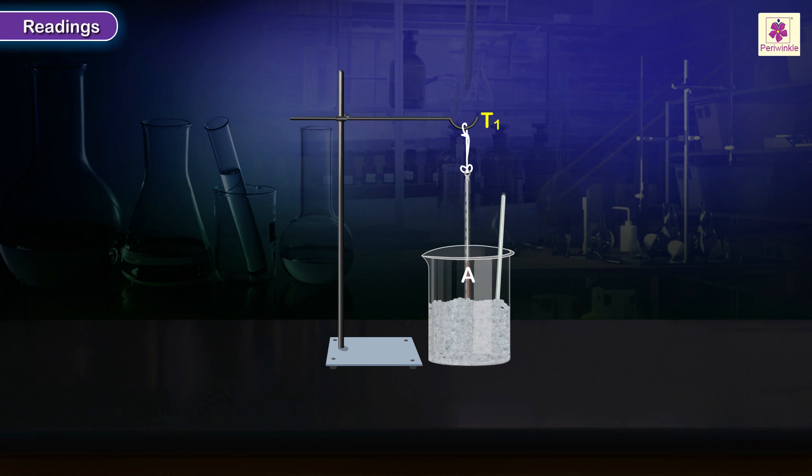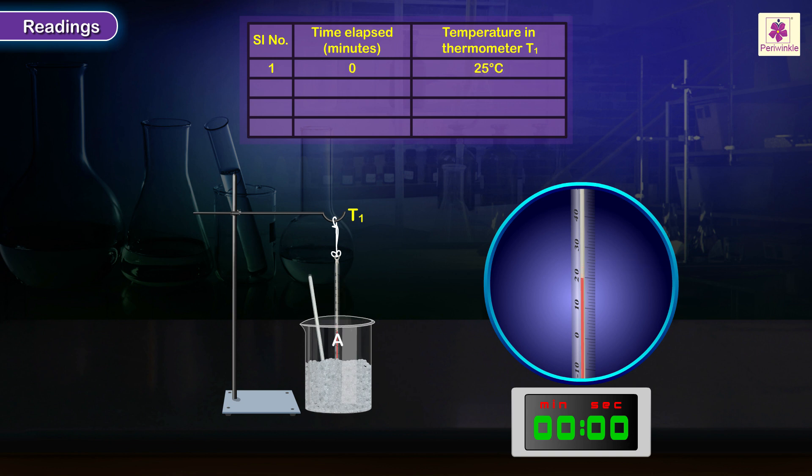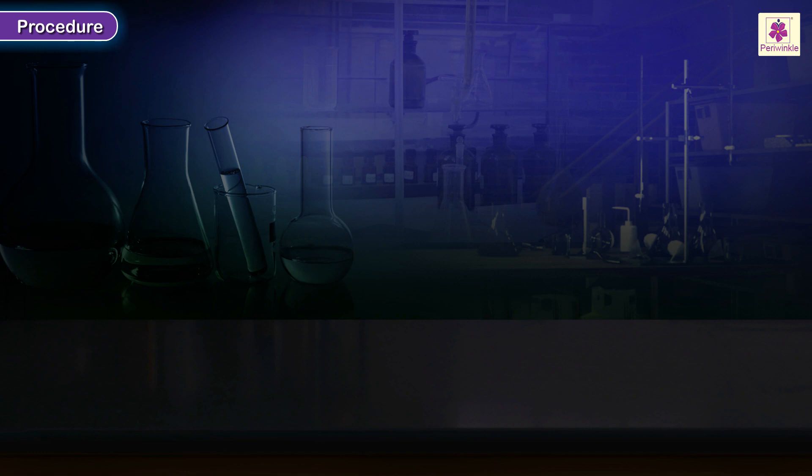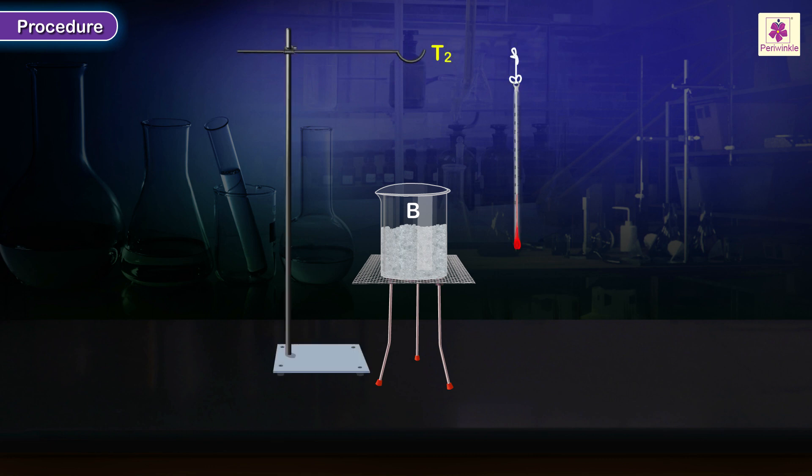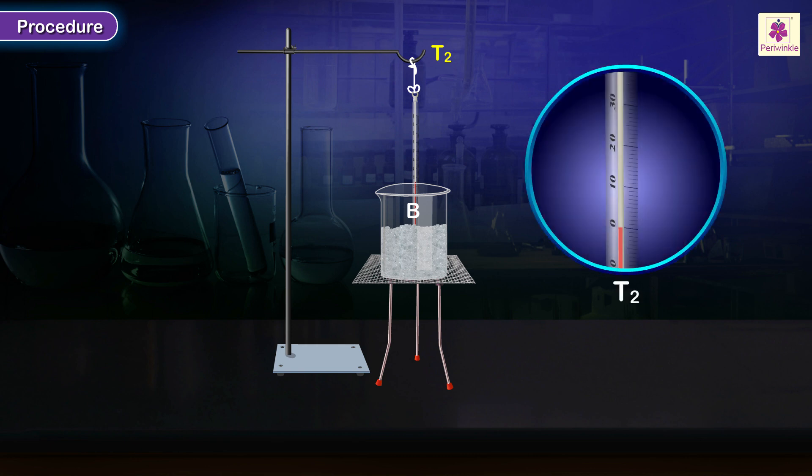Readings. Read and record the temperature on T1 once every two minutes. Note the temperature of the ice in beaker B.